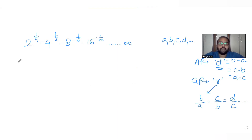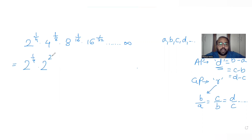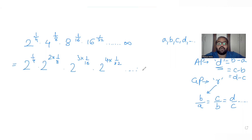The first step is to convert all terms to the same single base. I can write all terms as base 2. The first term is 2 raised to 1/4. For the second term, 4 equals 2 squared, so it becomes 2 raised to 2 times 1/8. For the third term, 8 equals 2 cubed, giving 3 times 1/16. For the fourth term, 16 equals 2 to the 4th, giving 4 times 1/32, and so on to infinity.